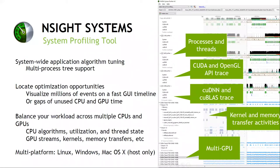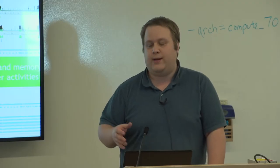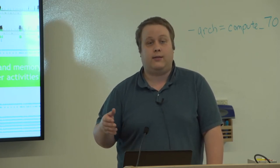Nsight Systems is designed to give you a timeline of what happened in your application. In the screenshot, at the top you see CPU workload information. In the middle you have various APIs that Nsight Systems can track — calls into CUDA, CUDA libraries, and MPI calls, for example. At the bottom you have the actual GPU workloads, typically shown as red for memory activity and blue for kernels — the compute workload. That helps you distinguish at a glance where your time is being spent.